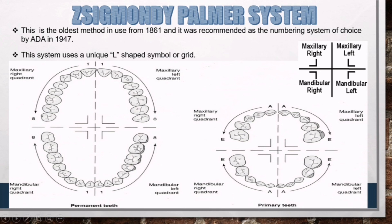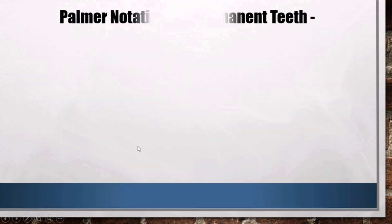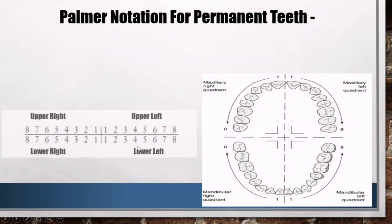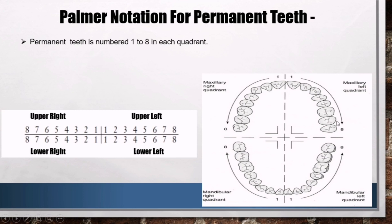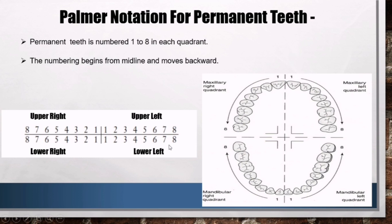Sigmondi-Palmer Notation for Permanent Teeth: permanent teeth are numbered 1 to 8 in each quadrant. The numbering begins from the midline and moves backward. For example, 1 is the central incisor, 3 is the canine, 4 and 5 are premolars, and 8 is the third molar.